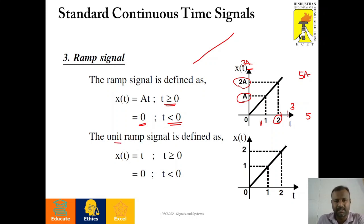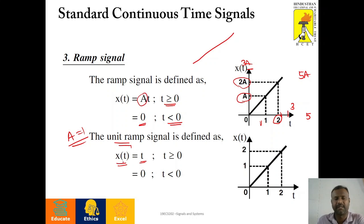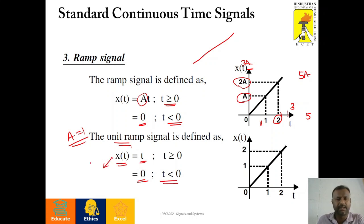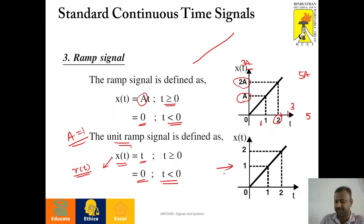Unit ramp is again a special case. When A equals 1, this ramp signal is the unit ramp signal. x of t equals simply t, since A equals 1. Hence, x of t equals t for t greater than or equal to zero, and x of t equals zero for t less than zero. This unit ramp signal is denoted as r of t. So, wherever we find the term r of t, that represents the unit ramp signal. This is the graphical form of the ramp signal.